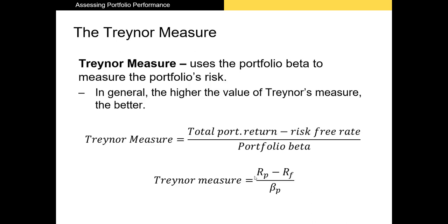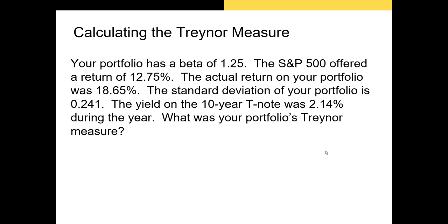Obviously, we want a higher Sharpe ratio. The next measure is the Treynor measure, which is very similar to the Sharpe ratio. The only difference is that in the denominator we include the portfolio's beta instead of standard deviation. If we have a diversified portfolio, we focus primarily on market risk as opposed to total risk, making the Treynor measure a good metric of risk-adjusted portfolio performance. It's just total portfolio return minus the risk-free rate divided by portfolio beta.